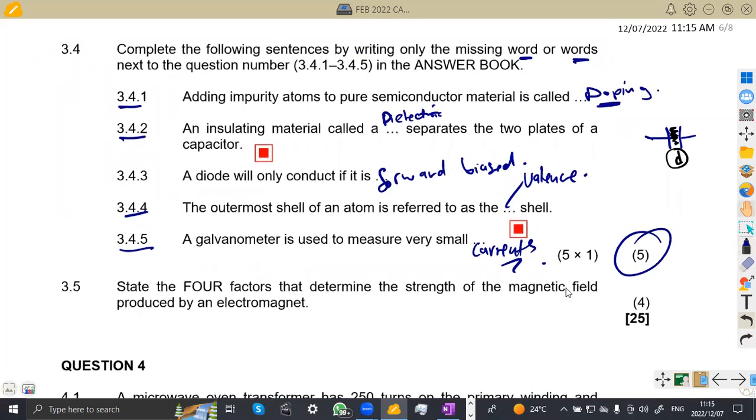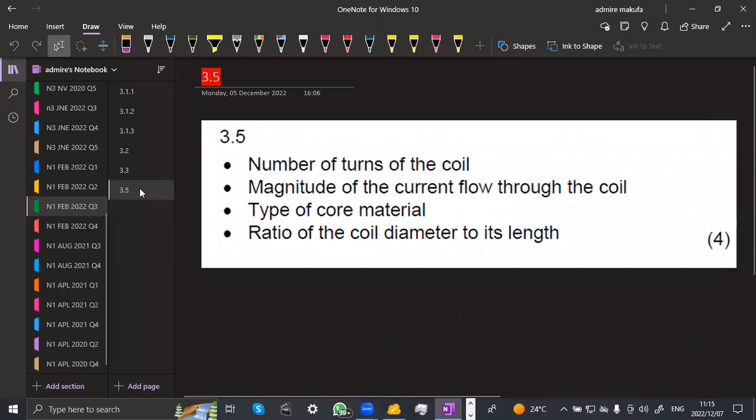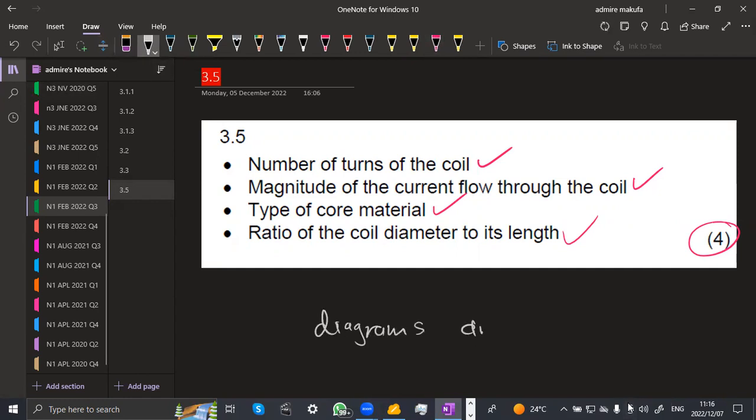State four factors that determine the strength of the magnetic field produced by an electromagnet. What are the factors? We've got our factors here. The number of turns of the coil. The magnitude of the current flowing through the coil. The type of core material. Then the ratio of coil diameter to its length. By just giving this, you're having four marks. The whole of question three was all on theory and diagrams.